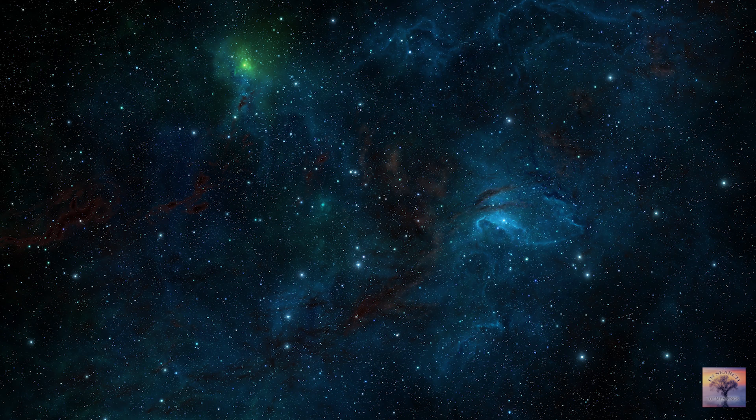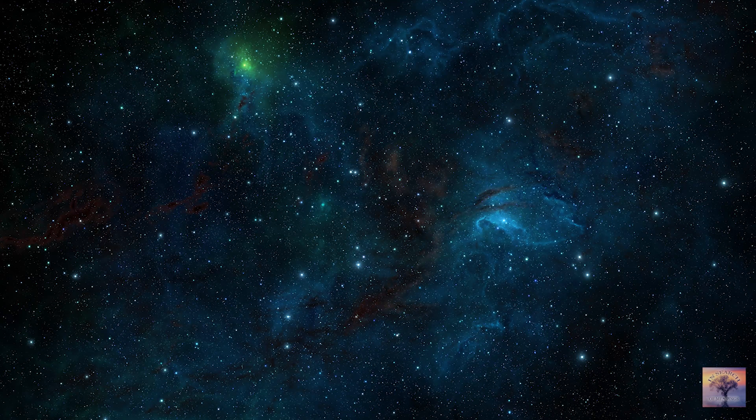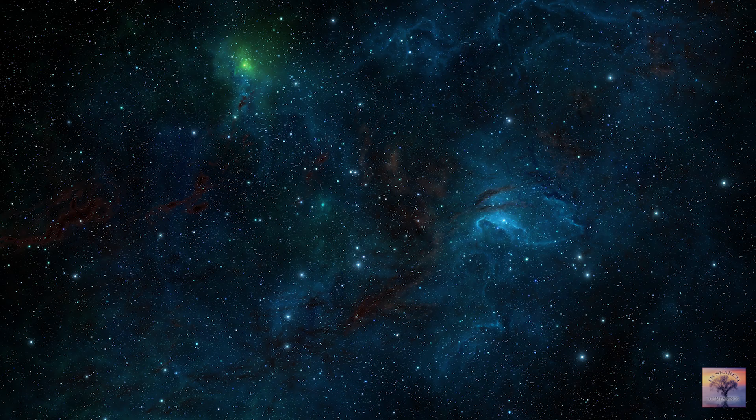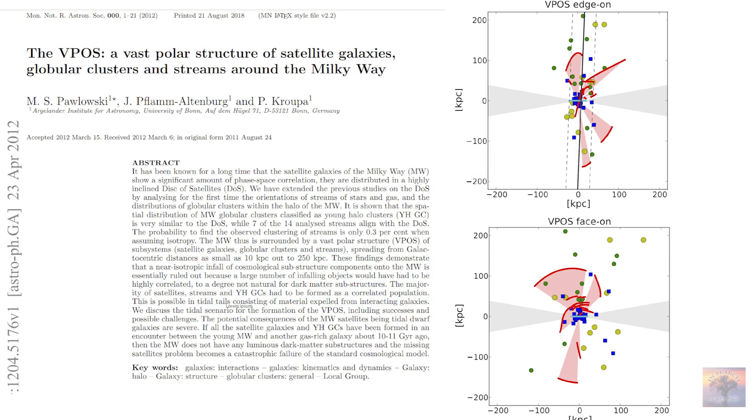In addition, to the surprise of the researchers themselves, it turned out that for some reason circular or near-circular orbits dominate in the movement of these satellite galaxies. And their movement itself has some synchronicity, which generally looks extremely strange. Because in order to create a system of bodies with circular orbits, it is necessary that these bodies fall into the gravitational field of the galaxy at a certain angle and at a certain speed. In all other cases, the orbits will be elliptical. In other words, it seems as if this structure was artificially created by someone.